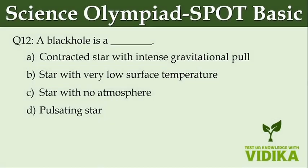A black hole is a dash. Option A: contracted star with intense gravitational pull. Option B: star with very low surface temperature. Option C: star with no atmosphere. Option D: pulsating star.